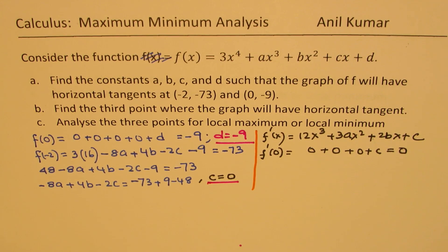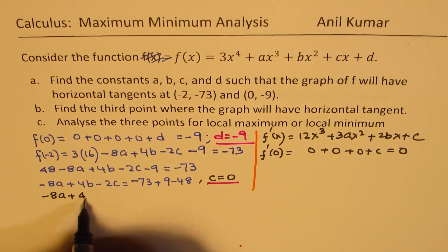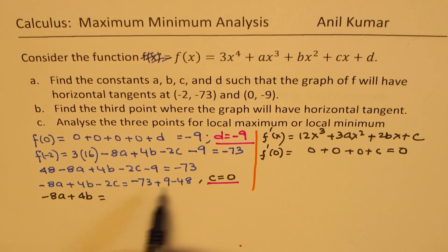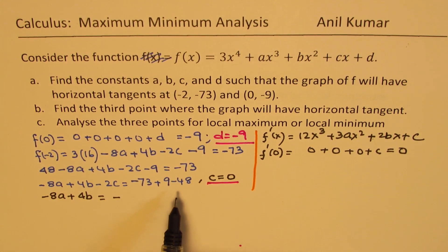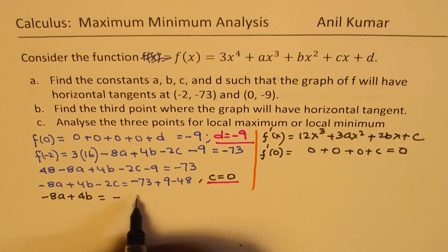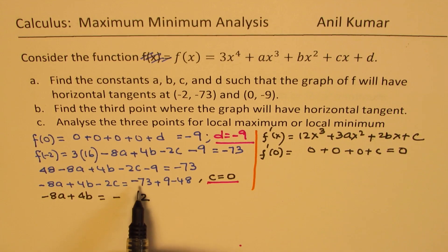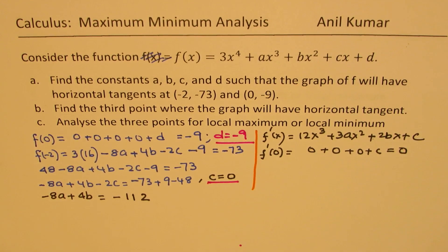With c = 0, the equation from f(-2) simplifies to -8a + 4b = -73 + 9 - 48. Combining the right-hand side: -73 + 9 = -64, then -64 - 48 = -112. So equation 1 is: -8a + 4b = -112.